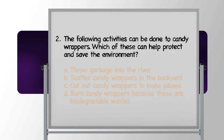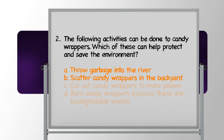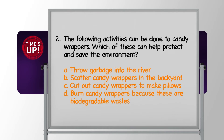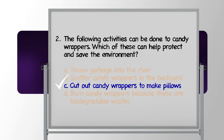Number 2: The following activities can be done to candy wrappers. Which of these can help protect and save the environment? A. Throw garbage into the river, B. Scatter candy wrappers in the backyard, C. Cut out candy wrappers to make pillows, or D. Burn candy wrappers because these are biodegradable waste. The correct answer is letter C — Cut out candy wrappers to make pillows. Candy wrappers turned into pillows is a good example of recycling. Good job, kids!